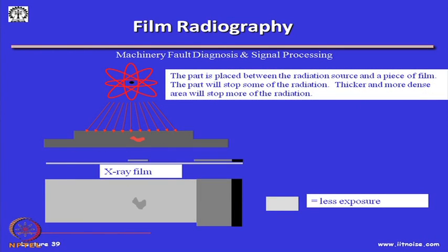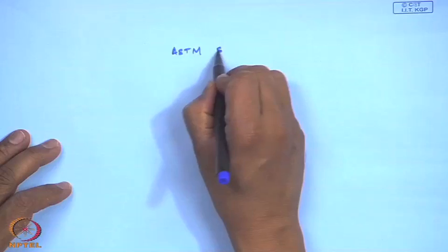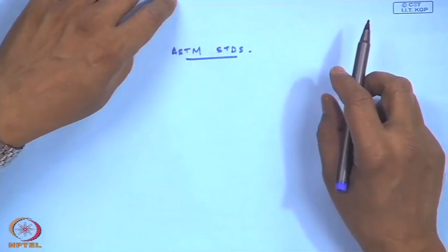In x-ray radiography, the part is placed between the radiation source and a piece of film. The part will stop some of the radiation — thicker and more dense areas will stop more radiation. If there is a defect, the film will show differential exposure: less exposed here, more exposed there. There are ASTM calibration standards available for x-rays, and many of these materials are available at iitnoise.com where NDT technique instruments like thermal imaging cameras, ultrasonic probes, and acoustic emission systems are in the laboratory.